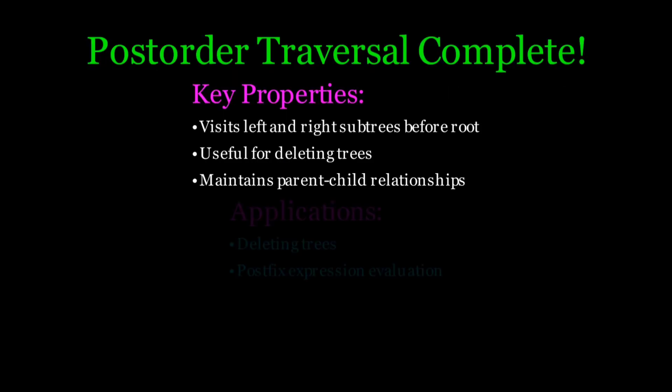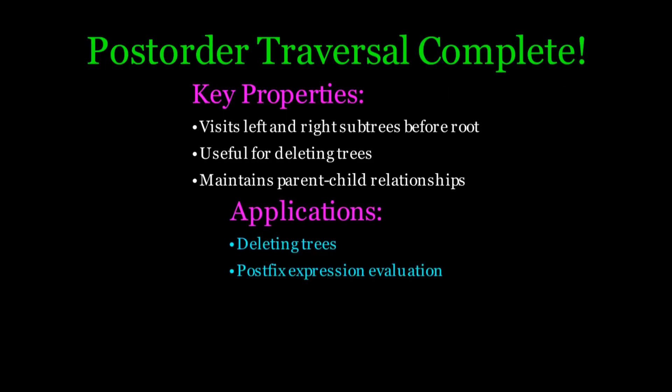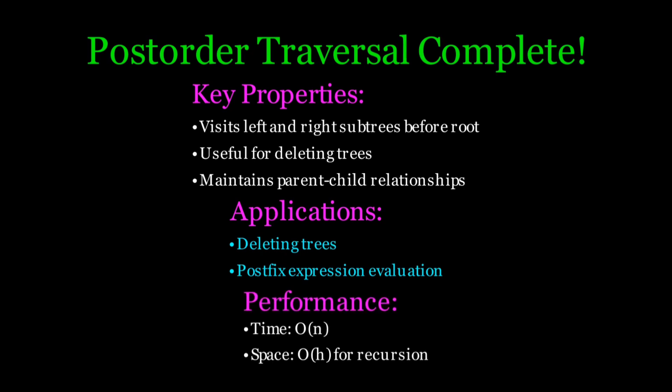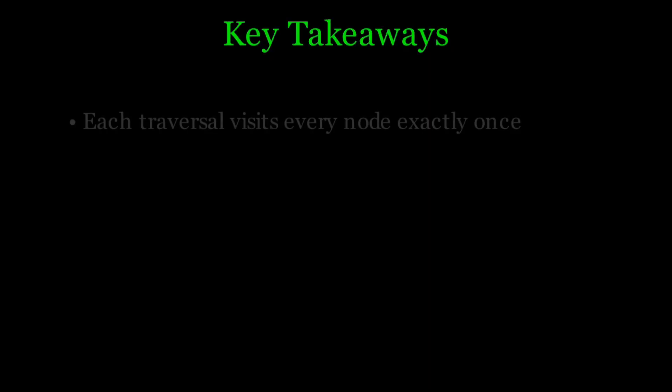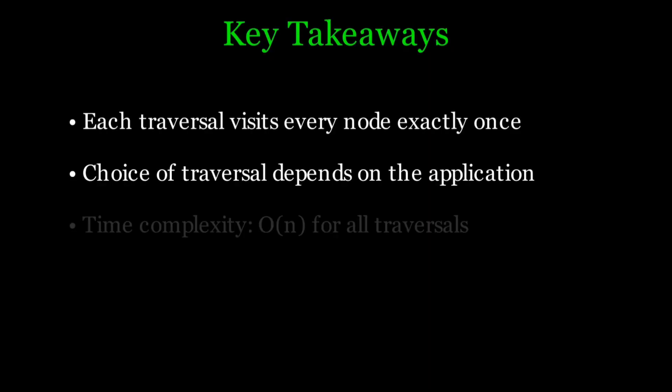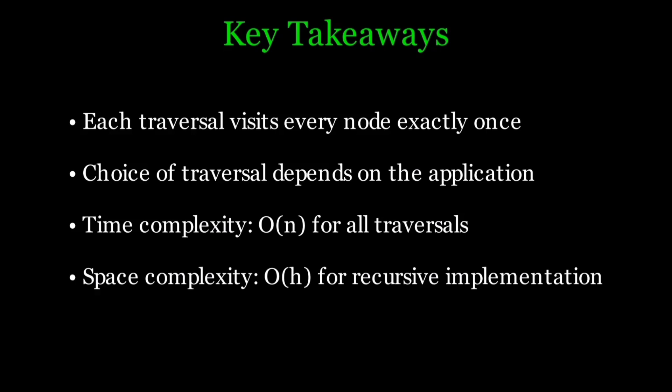Post-order traversal is commonly used in tree deletion and expression tree evaluation. It has a time complexity of O(n) and space complexity of O(h). The choice of traversal depends on the application — whether you need sorted output, tree copying, or tree deletion. Each traversal visits every node exactly once, with time complexity O(n) for all traversals and space complexity O(h) for recursive implementations, where h is the height of the tree.